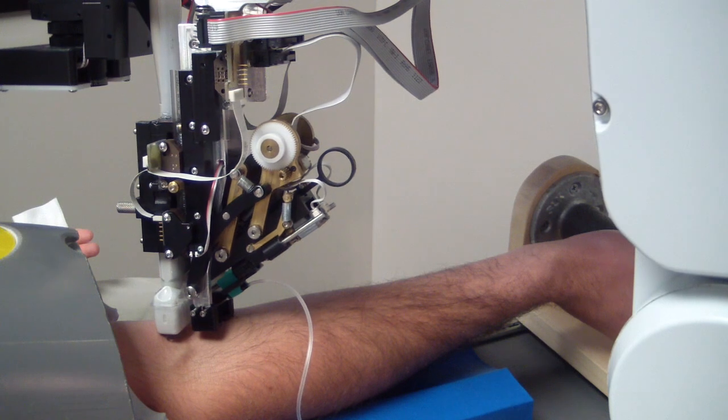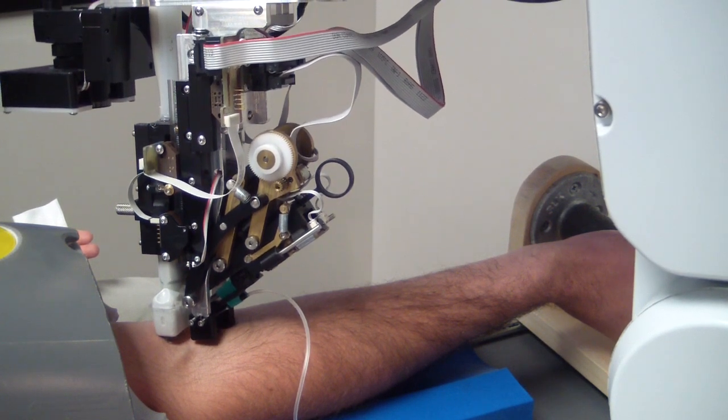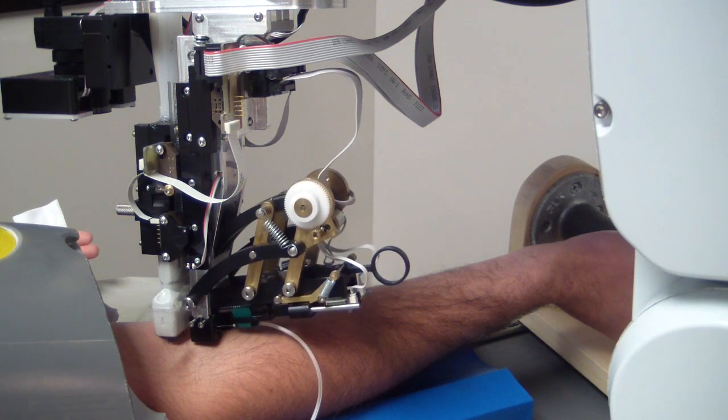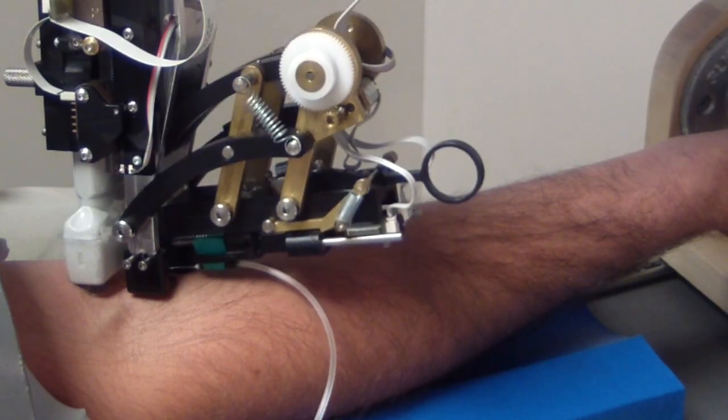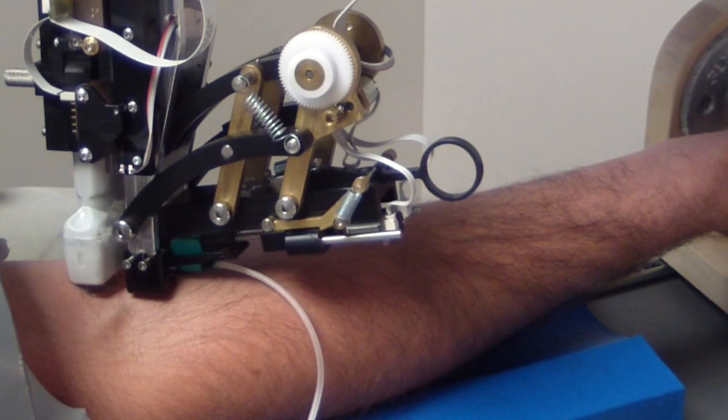Currently, V-Bot's machine can correctly identify the best vein to target about 83% of the time. That's about as good as an experienced technician. Company founder Stuart Harris plans to work the accuracy up to about 90% before starting clinical trials later this year.